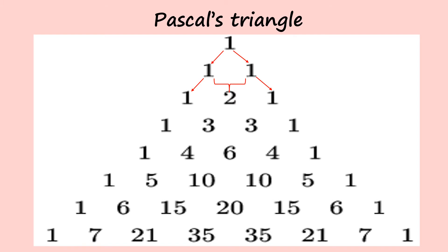Moving to the next row, we repeat the one, then add one plus two which is three, then two plus one gives us three, then we repeat the last term. If we continue this pattern, we get the full table, and there is a combinatorial formula for that.